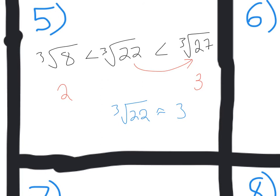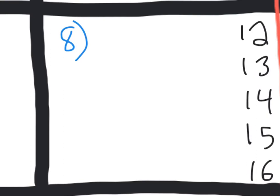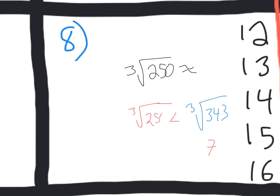Moving right along, let's look at number 8. The cube root of 250 is approximately what? Well, let's see what that falls in between. From our notes, the cube root of 343 is actually 7. And that's bigger than the cube root of 250. And that's probably somewhere in between the cube root of 216, which we know is 6.